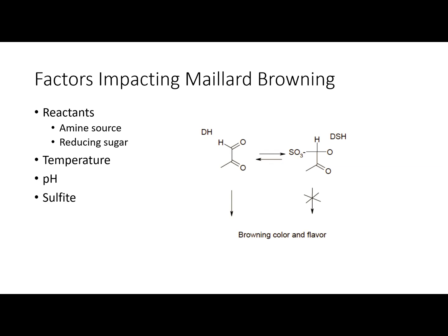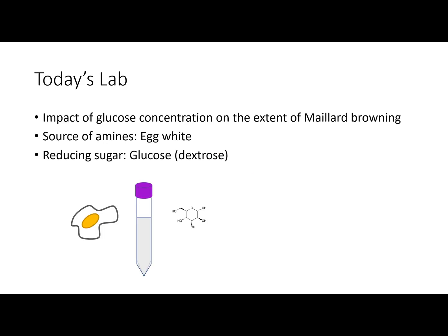Lastly, sulfite can inhibit the formation of our brown colors. What happens is a nucleophilic attack on the aldehyde of our reducing sugar — once that nucleophilic attack happens at the aldehyde position, we can no longer continue down our reaction pathway to form our brown products and Strecker aldehydes. So sulfite inhibits Maillard browning.